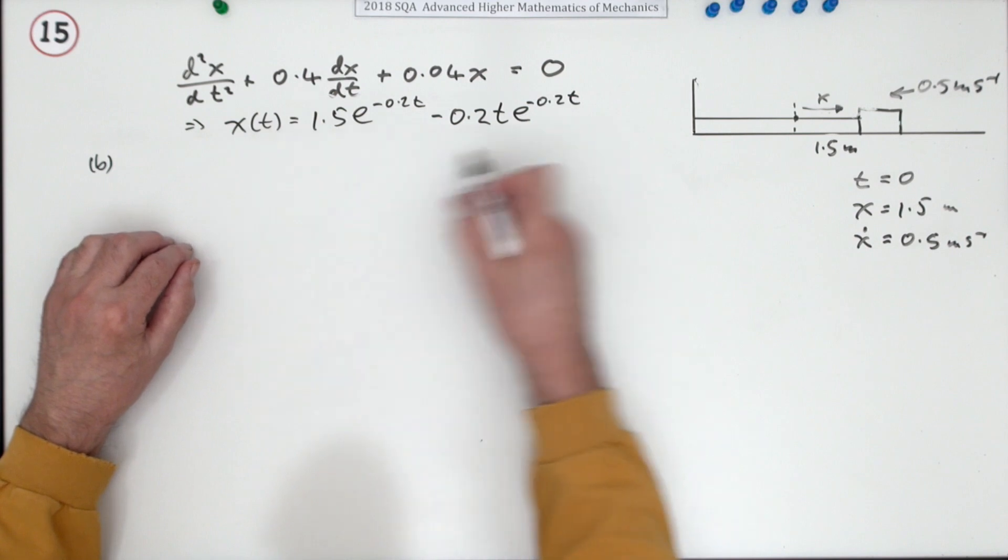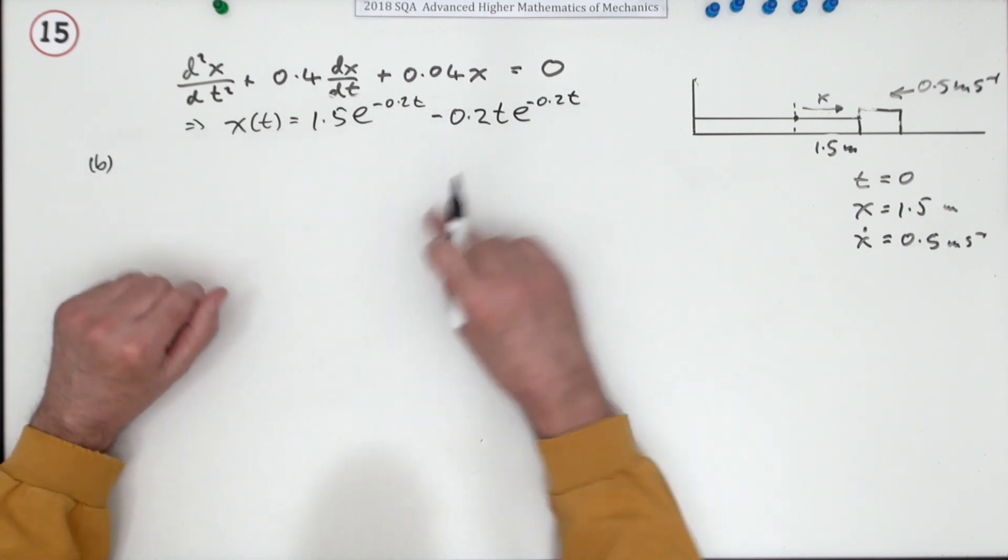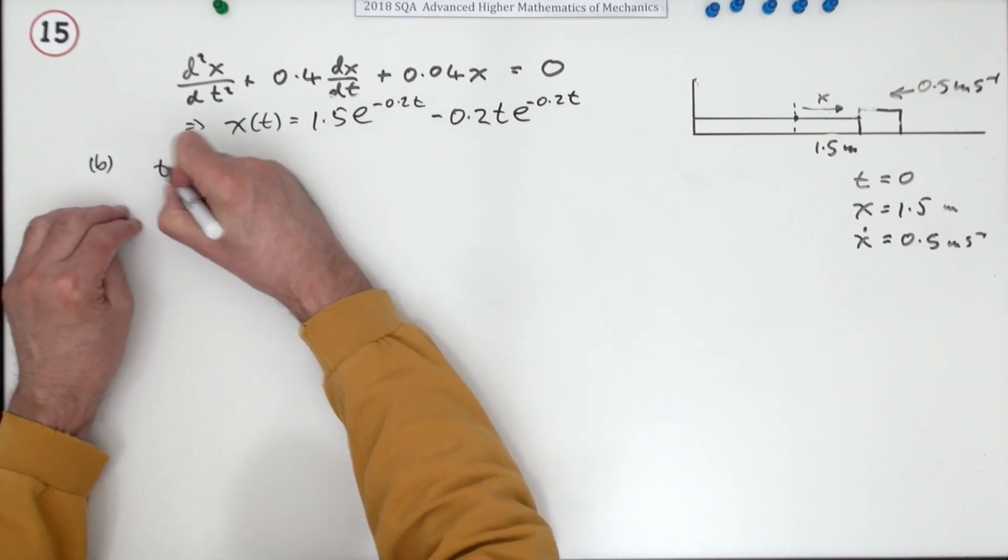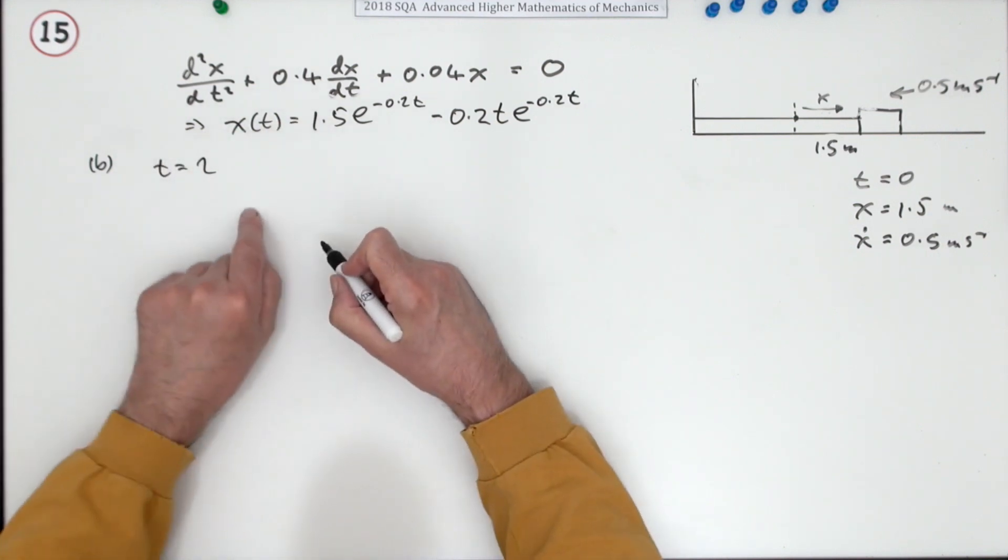But because this just says it's gliding slowly back to rest, then at two seconds, wherever it is after two seconds, that'll be the distance it's moved. I don't think you need to understand actually the interpretation of that solution to do this. I'm sure they just wanted to see: if t equals 2, what's the value of x?